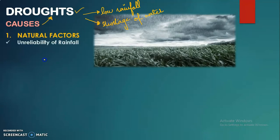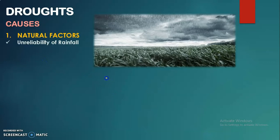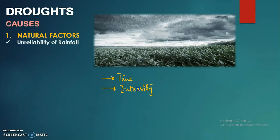The first natural factor is the unreliability of rainfall. When we talk about rainfall, there are three things we are not aware of: number one, we don't know the exact time of rainfall, which is why farmers mainly do not rely on it; number two, the intensity of rainfall — whether it would be a heavy or light shower; and number three, the distribution of rainfall — where exactly it would occur. That's why we mainly rely on canal irrigation, which is the major factor behind Pakistan's irrigation system.